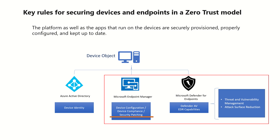The next rule is that the platform and apps running on the device are securely provisioned, properly configured, and kept up to date. Since vulnerability in an enterprise is inversely proportional to security, Windows Defender for Endpoints provides vulnerability management capabilities. TVM and ASR are two specific key areas here. Make sure there are almost no vulnerabilities existing in your enterprise — it's exceptionally hard, but you need the right practices in place.